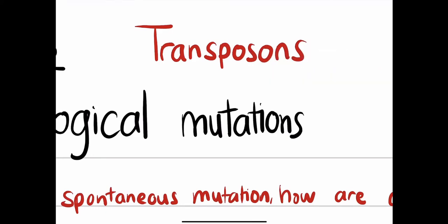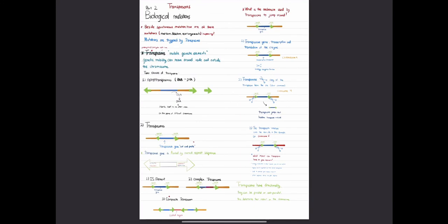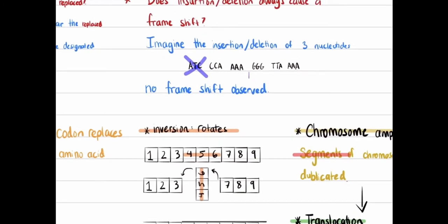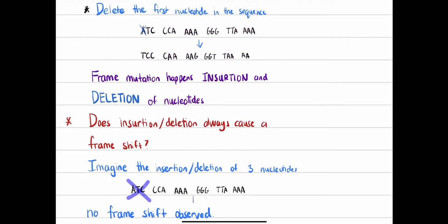As promised, here's the next video. Before we talk about transposons, we want to highlight the fact that prokaryotes and eukaryotes have mobile genetic elements in their genetic information, and these are called transposons. Even though eukaryotic transposons are considered to be old defects of retroviruses, they still have genetic mobility — a short segment of sequences can basically jump around from one spot on the chromosome to the next, causing mutations such as inversions, deletions, and frame shifts.